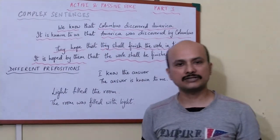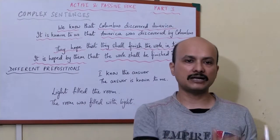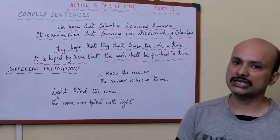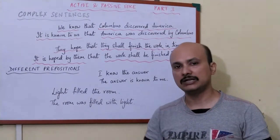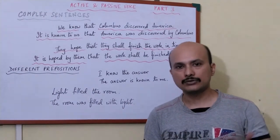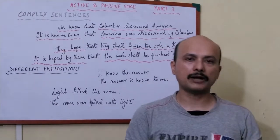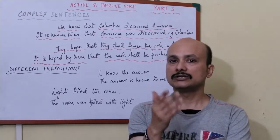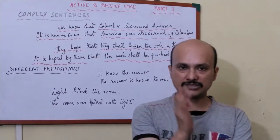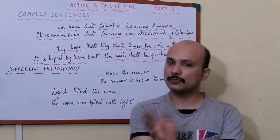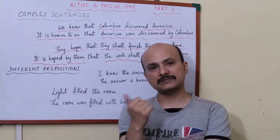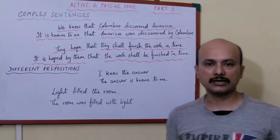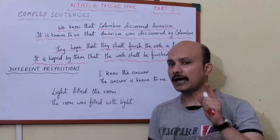In case of complex sentences, we change both the main clause and the subordinate clause into passive wherever possible. Many students only change one part of the sentence, which may be marked wrong by the teacher. It is better to change both parts whenever possible so that both the main clause and the sub-clause are in passive form.